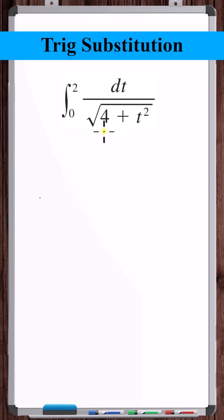Looking at this integral, we see an expression of the form 2 squared plus variable squared. With this type of expression, we can consider doing a trig substitution.